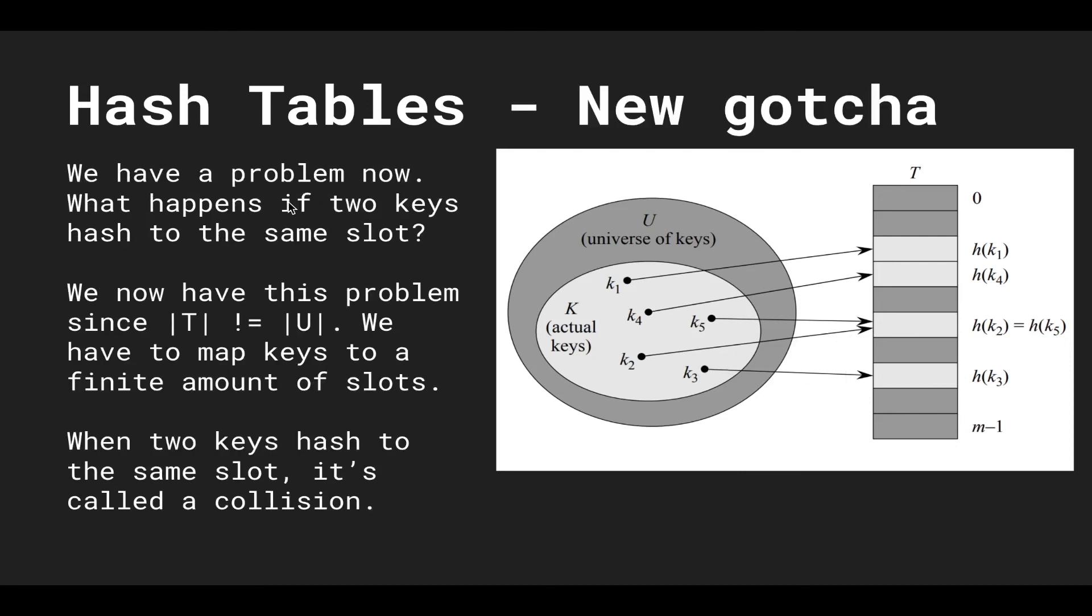We have a problem now. What happens if two keys hash to the same slot? So here we have k5 and k2 and the value of the function h for both of these values h of k2 and h of k5 map to the same value. We now have this problem since the size of our table is no longer the size of the universe. We cannot have a unique bucket for every universe because we are truncating the size of t. So when two keys hash to the same slot this is called a collision because they collide.